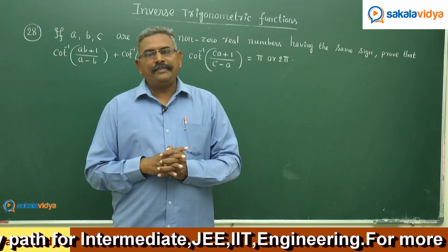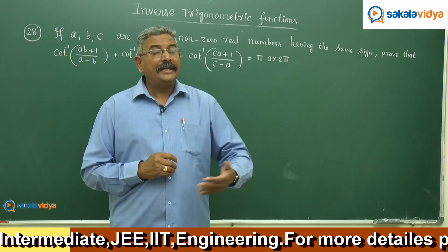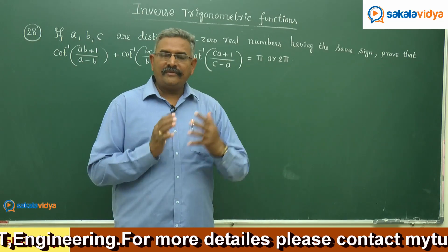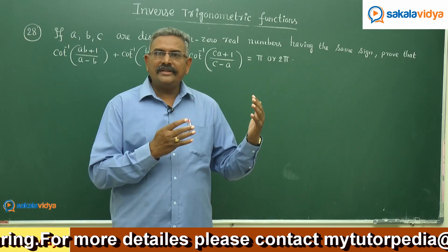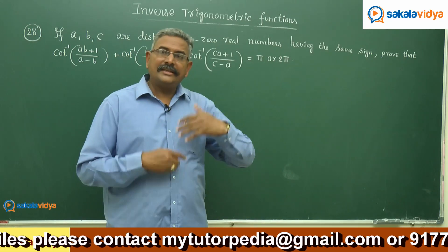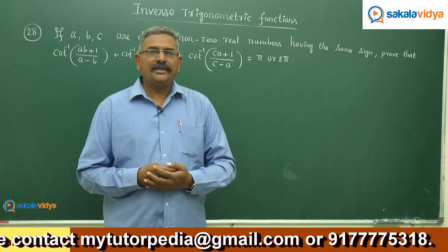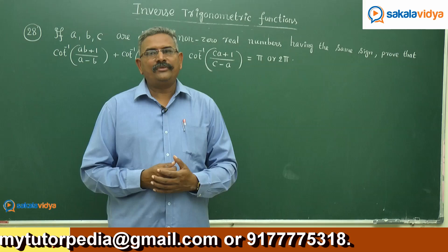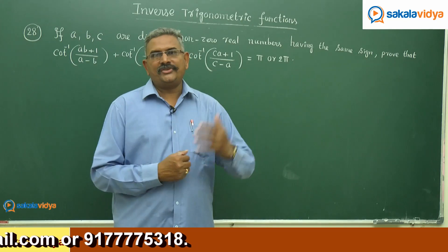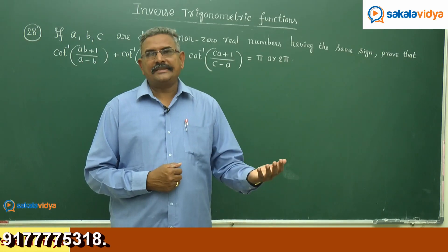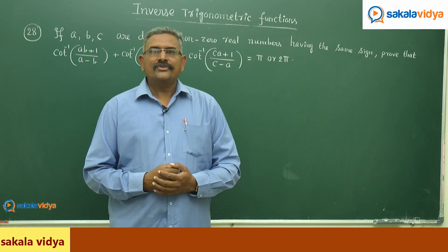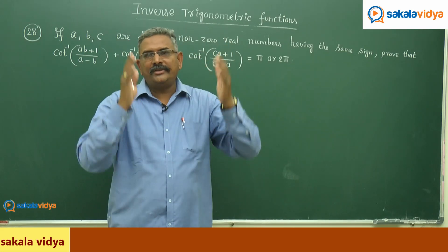Suppose a > b > c gives one condition, and a < b < c gives another. We need two formulae: cot⁻¹(x) = tan⁻¹(1/x) when x > 0, and cot⁻¹(x) = π + tan⁻¹(1/x) when x < 0. Keeping these in mind, let us solve the problem for each case.